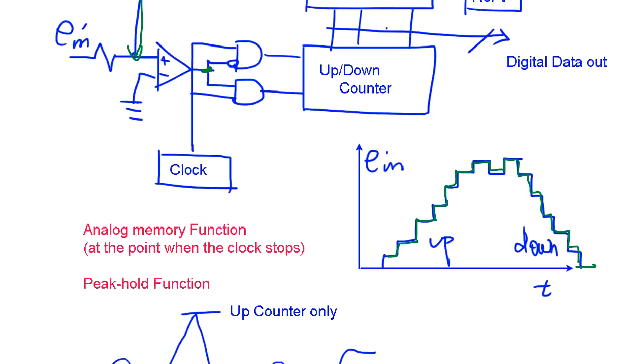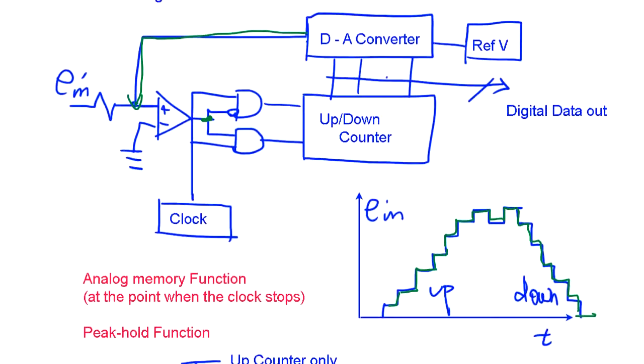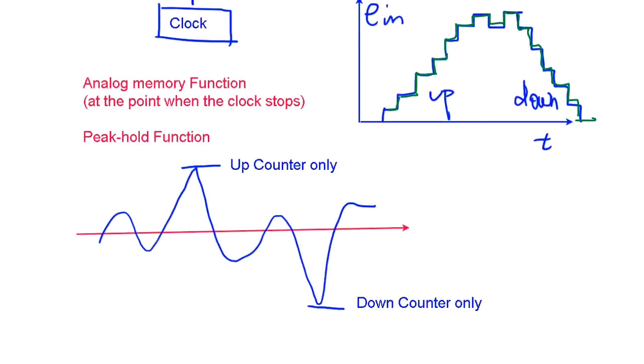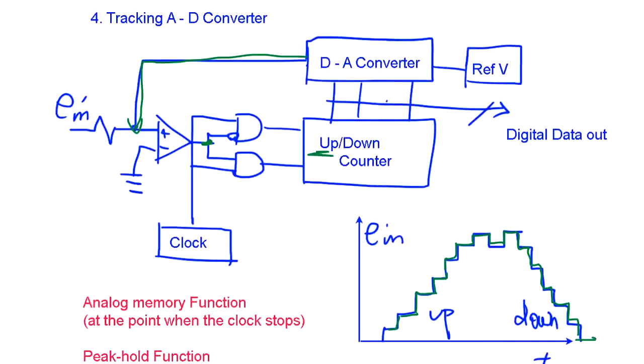What we do is we make it just up count only. We control up count only, then we have analog signal. The highest value we can keep in the counter, and that's going to give digital data. That means we can capture the highest signal.